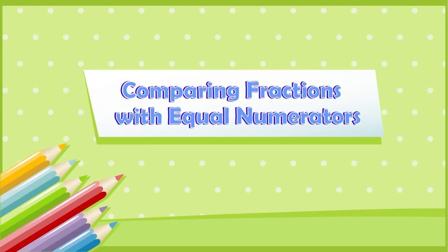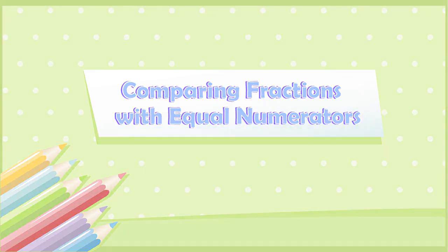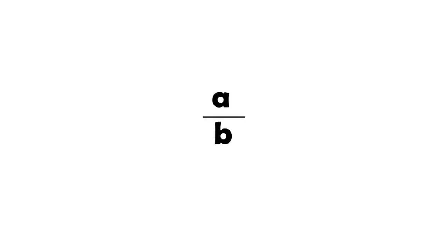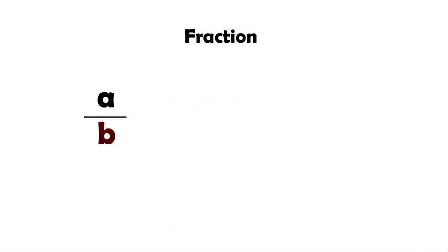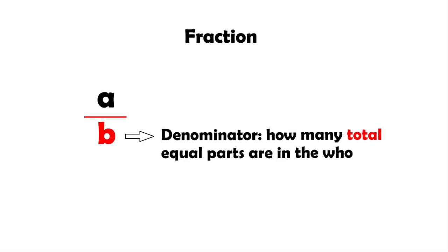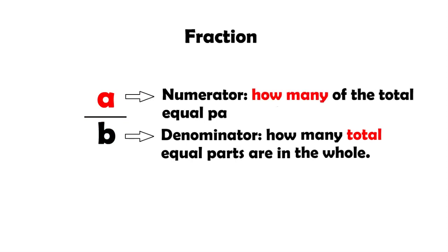Comparing fractions with equal numerators. As you learned before, a fraction has two numbers. The number below the bar is the denominator, which tells you how many equal parts are in the whole, while the number above the fraction bar is called the numerator, and it tells you how many equal parts are represented.